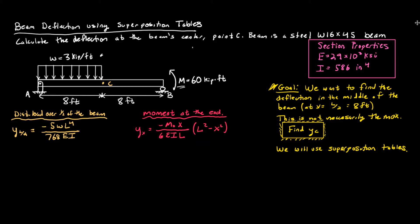In this gold color is the equation for a distributed load over half of the beam. They had an equation for y at L over 2, which is what we want — that's going to be negative 5 times wL to the fourth over 768 times EI. For the moment in red, they didn't have an equation explicitly for y at L over 2, but they did have an equation for y as a function of x — what we usually call the elastic curve equation.